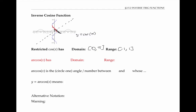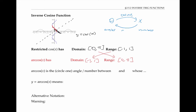And so our inverse function arc cosine has domain from negative one to one, and range from zero to pi. Since cosine takes us from angles to numbers, arc cosine takes us from numbers back to angles.